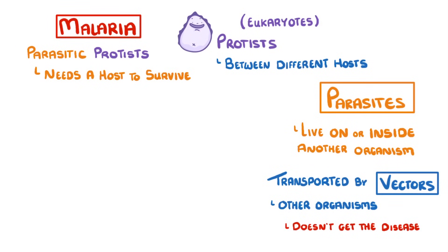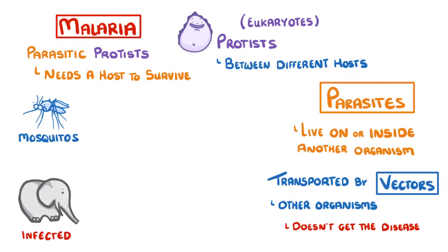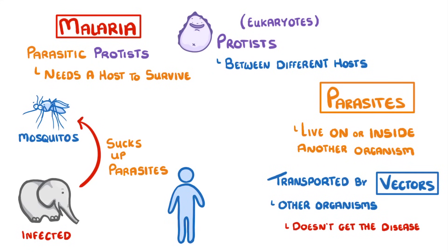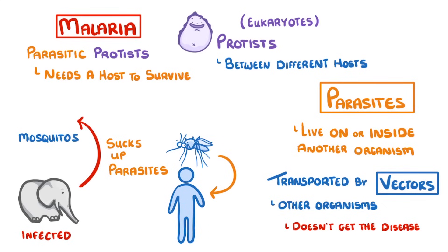Importantly, it's transported between hosts by mosquitoes. When a mosquito feeds on an animal that's already been infected and it sucks out some blood, it can also suck up some of those malaria parasites. Then when another healthy animal comes along, like a person, and the mosquito feeds on that animal, the parasites get transferred. At which point we would say that the protists have spread to a new host.